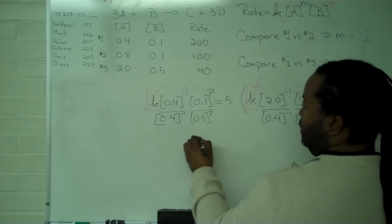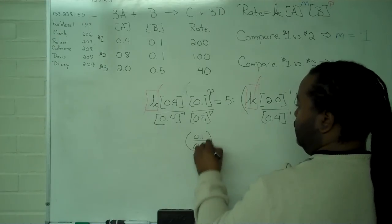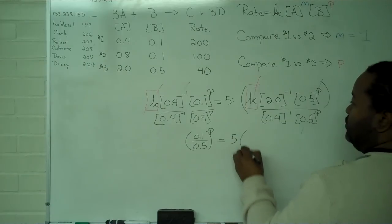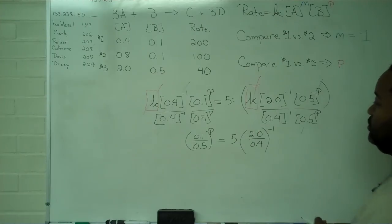What we're now left with is 0.1 over 0.5, raised to the P. That equals 5 times 2.0 divided by 0.4, all raised to the negative 1.